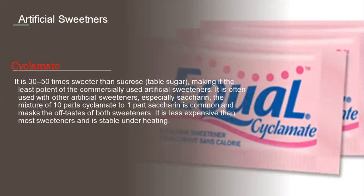Next is cyclamate, another synthetic product. It is 30 to 50 times sweeter than sucrose, which is our regular table or grain sugar, making it the least potent of the commercially used artificial sweeteners. It is often used with other artificial sweeteners, especially saccharin. It was preferred principally because it has little or no aftertaste, and because it is heat stable in processing, unlike saccharin which is not heat stable.